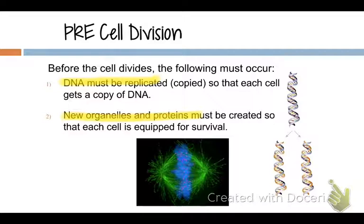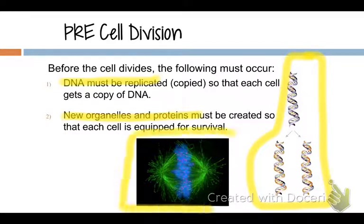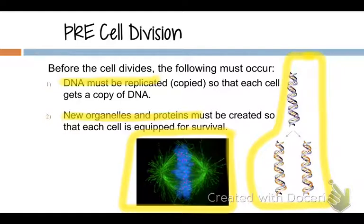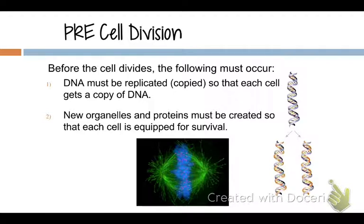Over here we have DNA replication happening — we just had that in our last chapter. In this picture, in blue, the chromosomes are lining up along the center of the cell, and the green structures are the spindle fibers getting ready to pull the chromosomes apart so that each new daughter cell gets a full set. That is a picture from mitosis, just using a different dye.